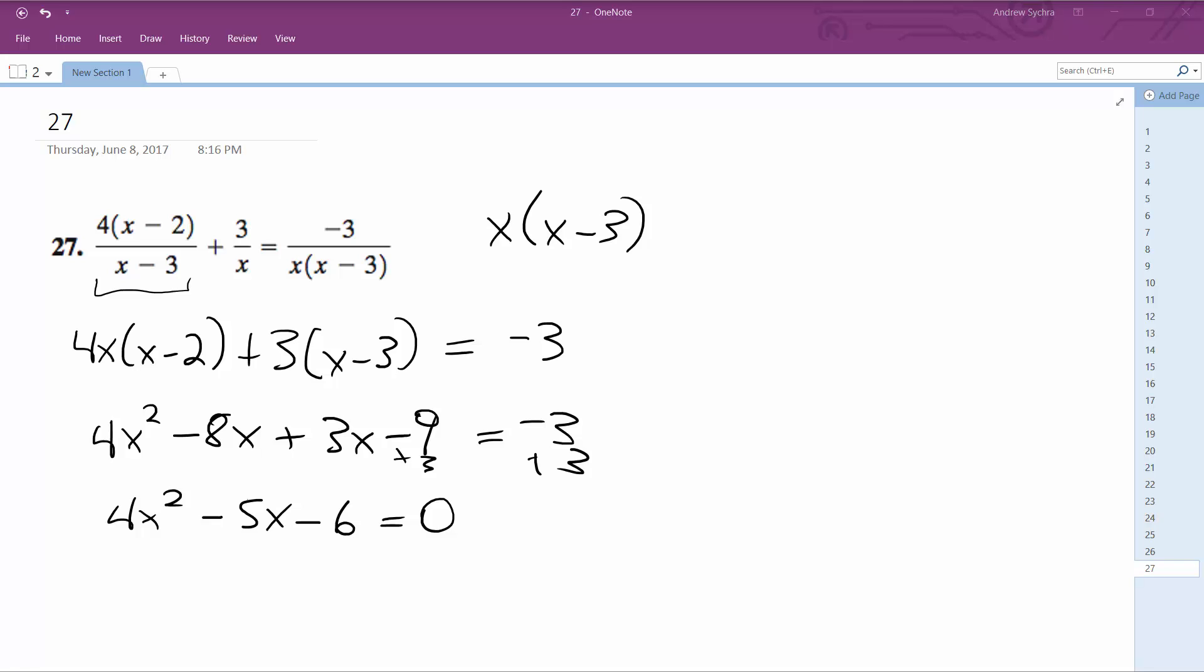So I've got to factor this now. So this actually factors down into 4x plus 3, x minus 2 equals 0.